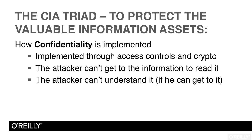So permissions will deny access to anyone except those on the approved list, keeping the bad guy away from confidential information. The other tool we use is cryptography. Cryptography takes the sensitive information and encrypts it — converts it into a form that is not readable by a human. The bad guy can't understand it. He's aware that the message exists, but he doesn't have the ability to decrypt it and therefore understand the meaning of the valuable information asset.